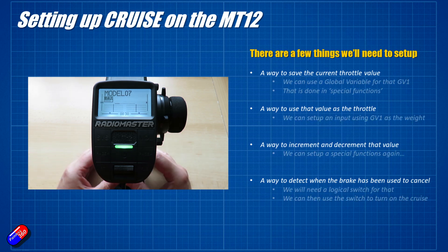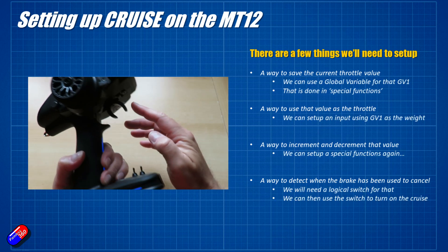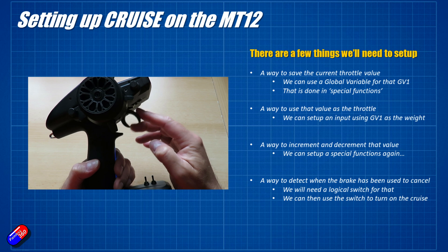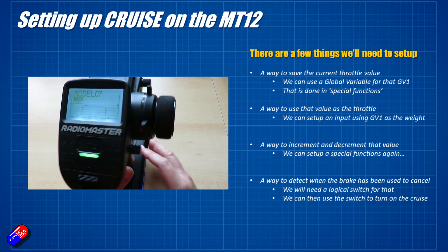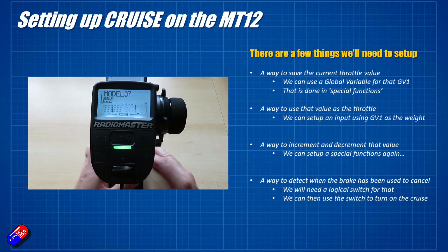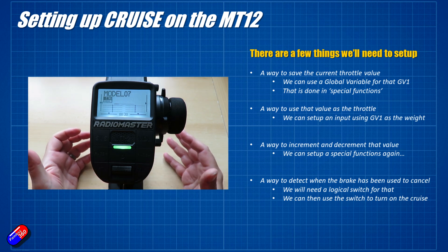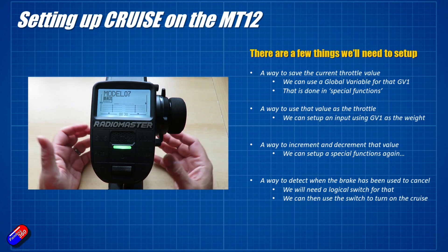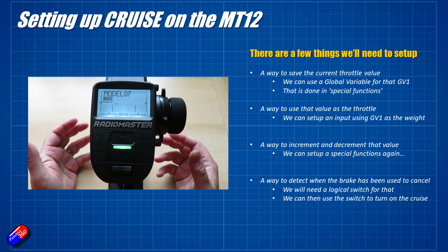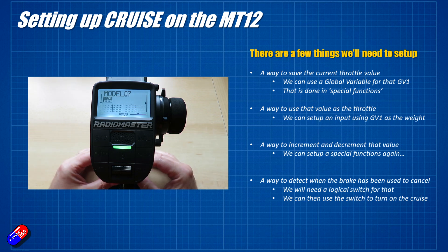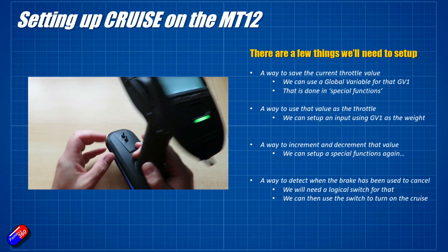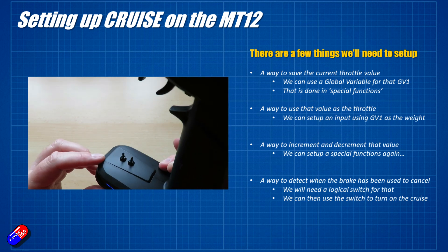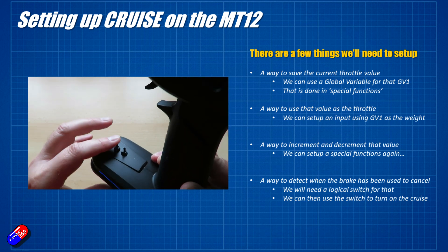We're going to use something called global variables to store the throttle value — that's going to allow us to keep it somewhere safe and use it in the mixes. Then we're going to create an input that uses that global variable as the value, and that's essentially going to be our replacement throttle while we're running around. We're also going to set up these two switches here, these extra ones I've added at the bottom.